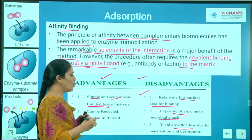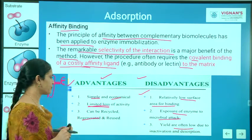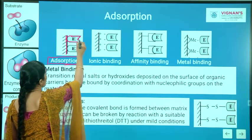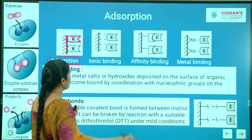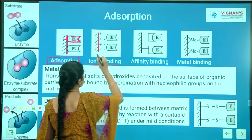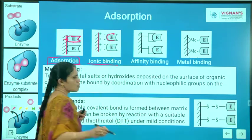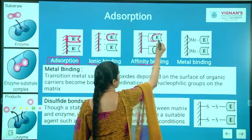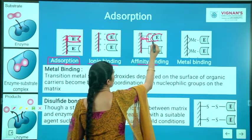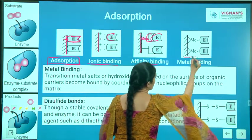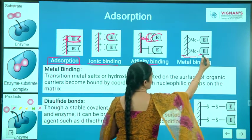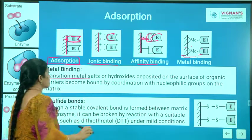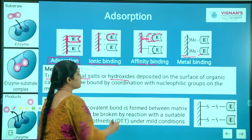The yields are often low due to inactivation and desorption. In plain adsorption, the enzyme is linked to a solid support via weak bonds. In ionic binding, a support links to the enzyme via salt bridges. In affinity binding, support and enzyme are linked via a ligand. In metal binding, both are linked with the help of a metal — mostly transition metal salts or hydroxides.